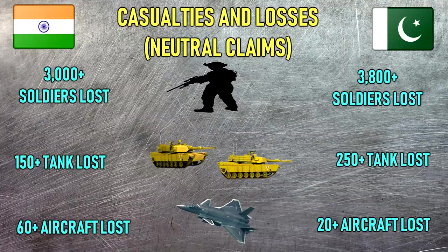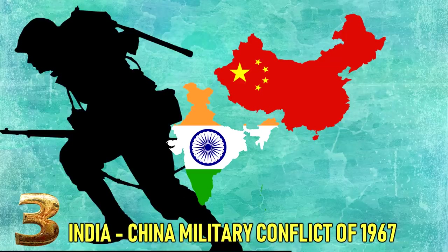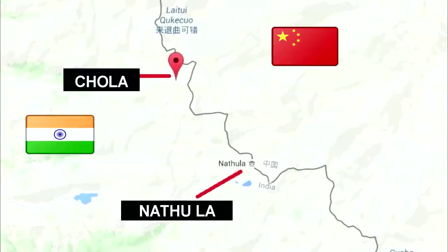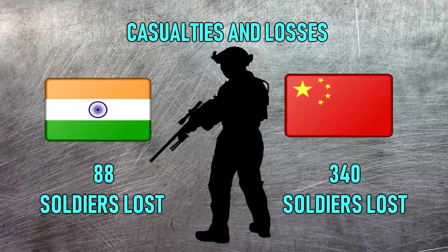Number three: the India-China military conflict of 1967. It was not a war but a conflict. Conflict location: Nathu La and Chola on the border between China and Sikkim. Result: Indian victory — China was pushed back from Sikkim. Casualties and losses: India — 88 soldiers killed; China — 340 soldiers killed.